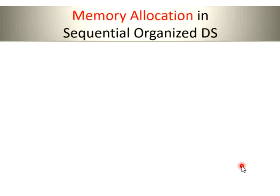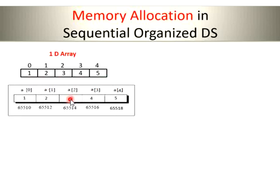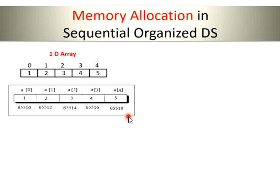Here you can see how memory allocation is done in a sequential organized data structure. For a 1D array of size 5, initialized with 5 values, the memory is allotted in a sequential way. Considering that every integer value requires 2 bytes, array[0] starts at the base address 65510. Array[1] is located 2 bytes after, then array[2] another 2 bytes after, and so on. In this way, memory is allotted continuously — that's why it is a sequential organized data structure.